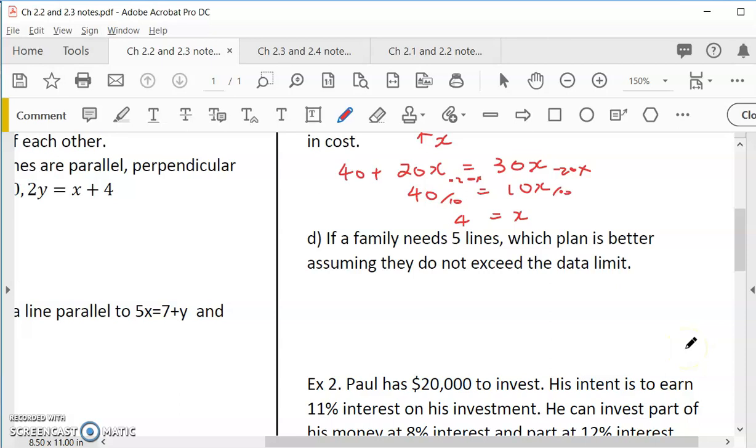If a family needs five lines, which plan is better? Assuming that they do not exceed the data limit of 4GB. So if I have a five lines family, so that means when X is five. So I can use C for the first one. So we can find the cost for the first plan, which is 40 plus 20 times 5. So that would be 20 times 5 first. 100 plus 40 is 140. For the second plan, we use the model to calculate. It's zero. So it's just 30 times 5. It is 150. So which plan is better? First plan is 140. It's cheaper.